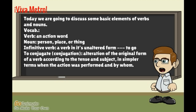Today we are going to discuss some basic elements of verbs and nouns. Let's begin with some vocab. A verb is an action word. A noun is a person, place, or thing. An infinitive verb is a verb in its unaltered form — for example, 'to go.'